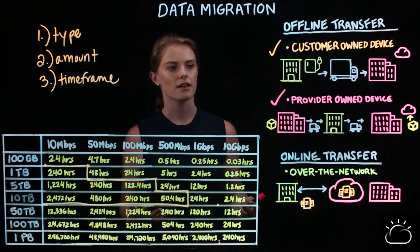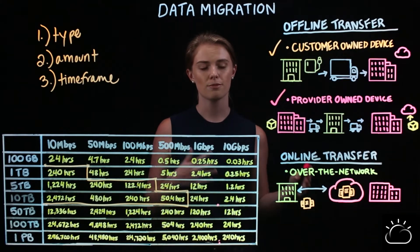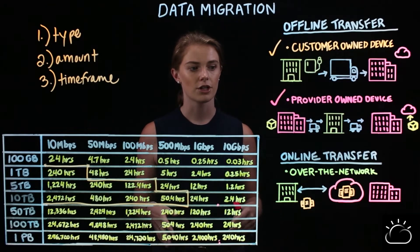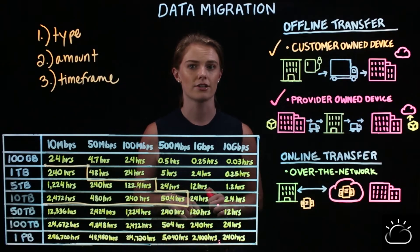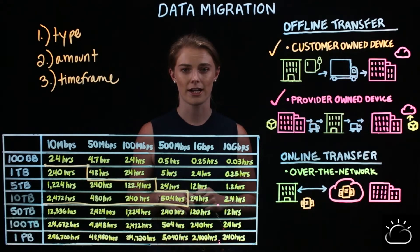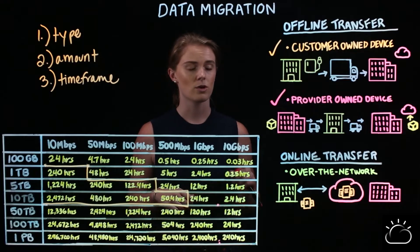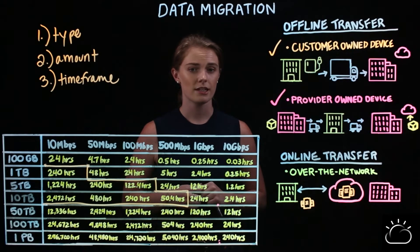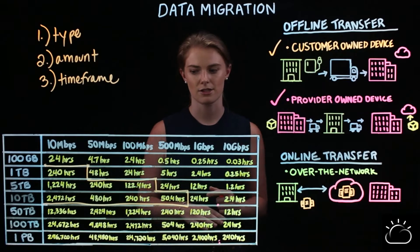With a provider-owned device, your cloud provider ships you a large-capacity portable storage device to your location. You put your data onto it and then immediately send it back to the cloud provider's data center. Once it arrives, they immediately offload your data from that device into your target cloud environment. Once the transfer is complete, you're free to access your data while the cloud provider securely wipes the device and returns it to inventory for reuse.